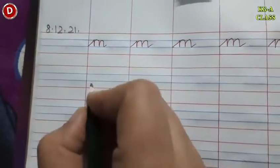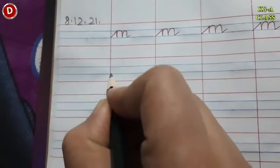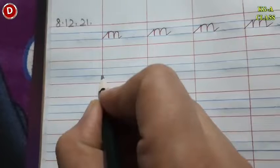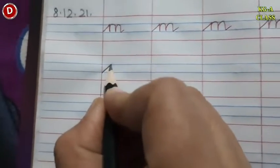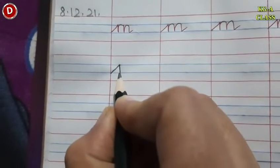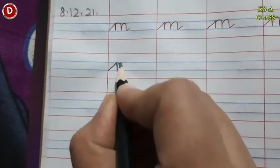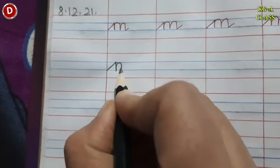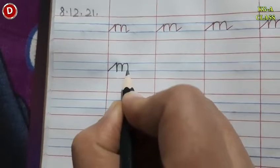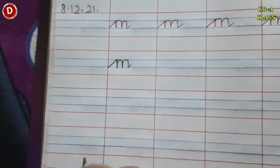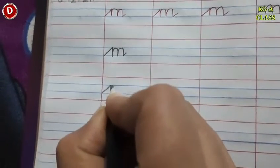Now children, put your pencil on the second blue line. Take support of this red line. Make a slanting line till the first blue line. Then you have to make a standing line — go down, touch the second blue line. Again come up on the same line, then turn, go down, again come up on the same line, and then make a little loop like this. In this way, you have to write cursive M.